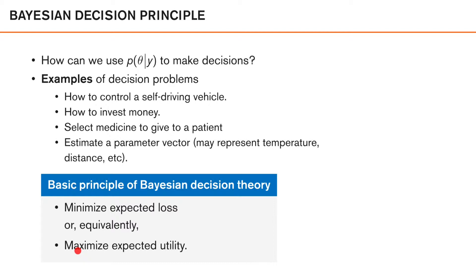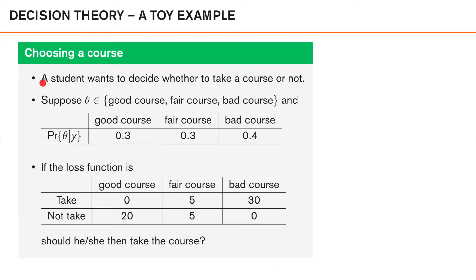But there are some pieces missing here that we haven't really discussed, and that is what a loss function is. But we will do this in this example. So suppose there is a student who wants to decide whether to take a course or not.